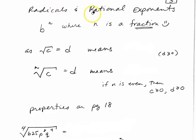And so radicals and rational exponents. And so fractions. So the base B to the N where N is a fraction. And so if N were 1 half, we'd end up with the square root. And so the square root, this is an example. If the square root of C equals D, then that would mean that D squared has to equal C.